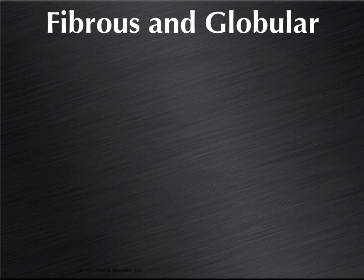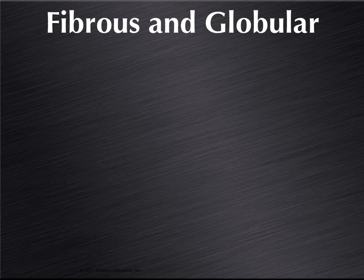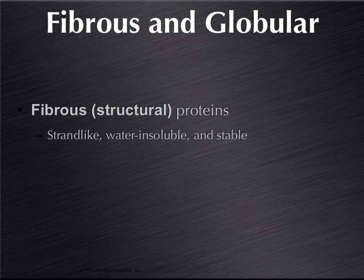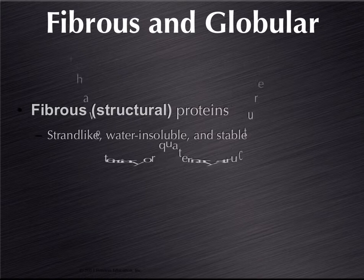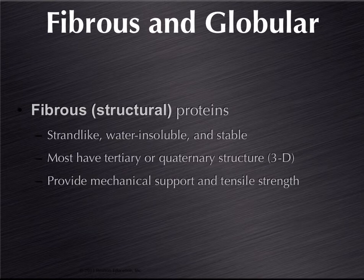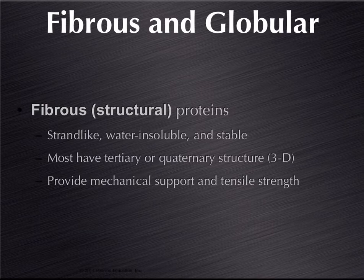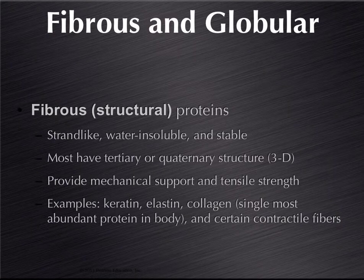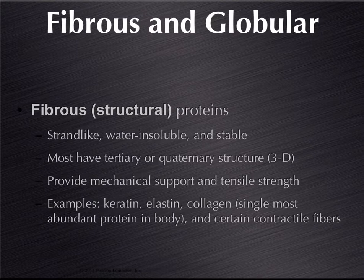Proteins can be either fibrous or globular, and their names are actually very descriptive. Fibrous ones tend to be long strands. Globular tends to be more of a little knot type structure. Fibrous structure proteins are most common structural. They're strand-like. They don't dissolve in water. They're very stable, and a lot of them have this three-dimensional quaternary structure, and they provide things like structure and support to the cell. Examples of fibrous proteins would include things like keratin, elastin, and collagen, which collagen happens to be the most common protein in the body, and some contractile fibers that we would find in muscle, like actin and myosin.